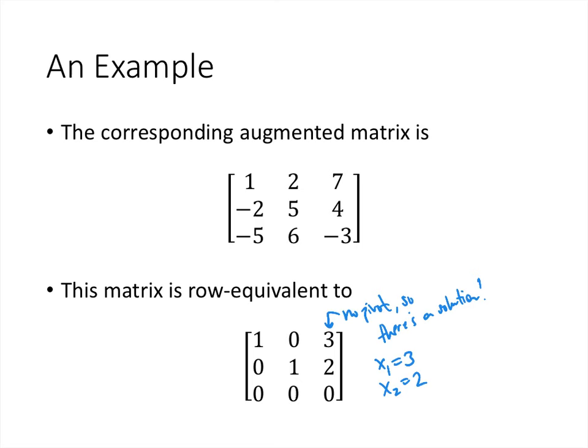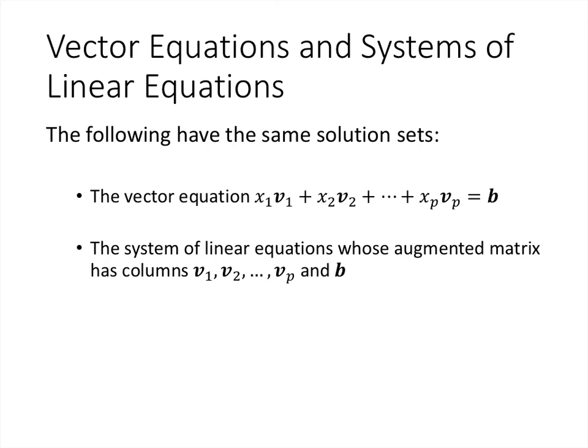So we have two seemingly different questions answered the same way. Asking whether a vector equation has a solution — where the variables are the scalar coefficients — is equivalent to setting up a system of linear equations whose augmented matrix has columns v1 through vp and last column b. We know how to solve that using row reduction. We'll talk about what this all means and why we care about linear combinations when we discuss span in the next lecture.